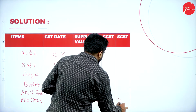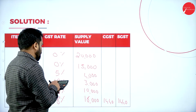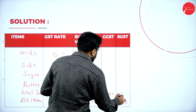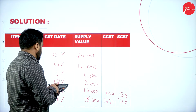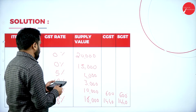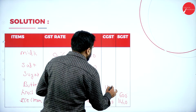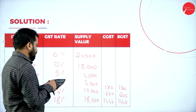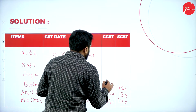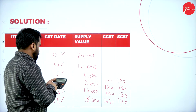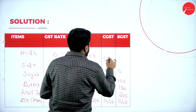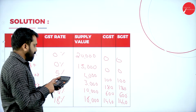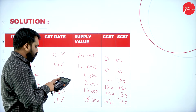Fruit juice: 10,000 into 12 percent divided by 2 equals ₹600 and ₹600. Butter: 3,000 into 12 percent divided by 2 equals ₹180 and ₹180. Sugar: 4,000 into 5 percent divided by 2 equals ₹100 and ₹100. Salt: 15,000 into 0 percent equals zero. Adding CGST totals: 100 + 180 + 600 + 1,440.